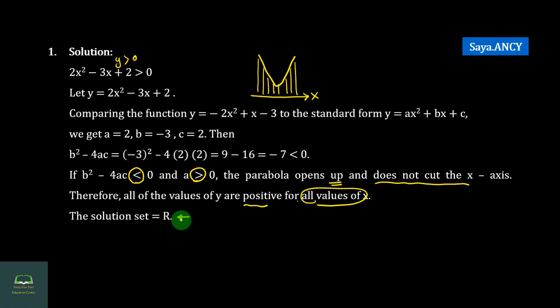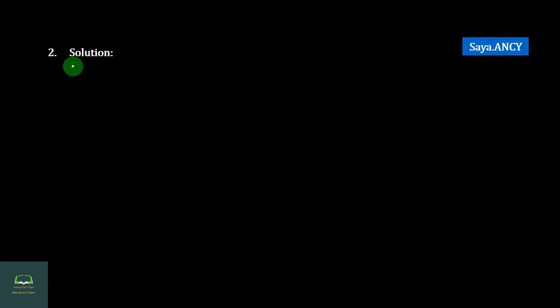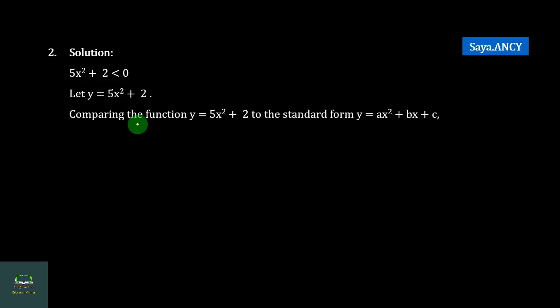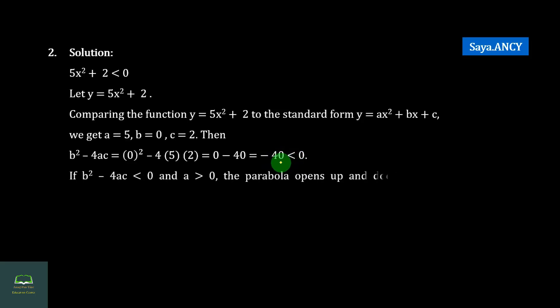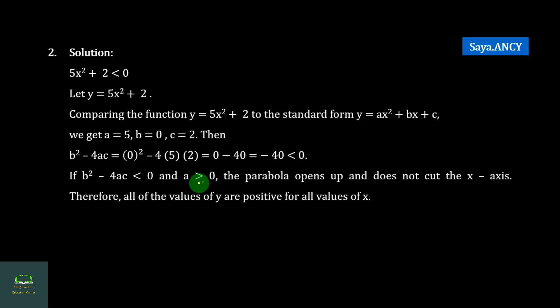Let y equal to 5 squared plus 2. Comparing it: A equals 5, B equals 0, C equals 2. And b squared minus 4ac is less than 0. Here, A equals 5 which is greater than 0. B squared minus 4ac equals 0.